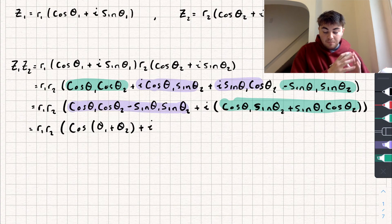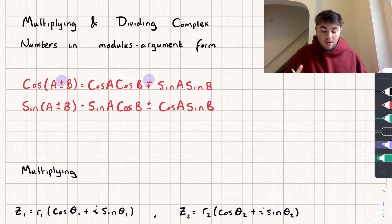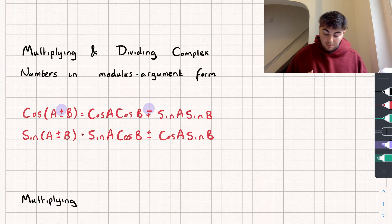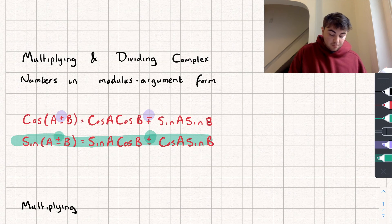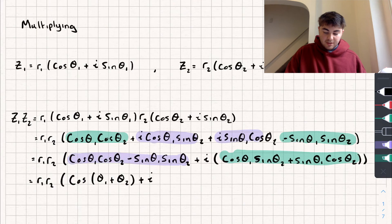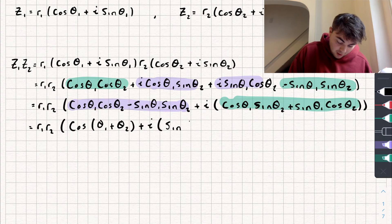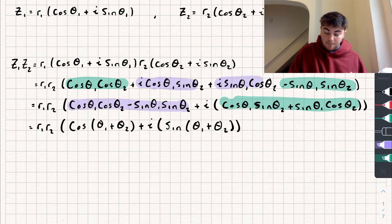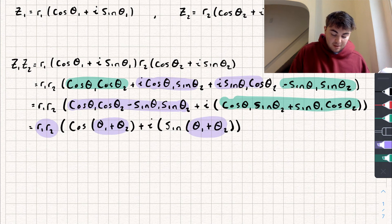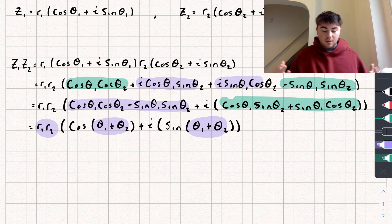For the imaginary part: cos theta1·sine theta2 plus sine theta1·cos theta2 refers to the sine angle addition formula. Because we're doing the addition, we add the angles, giving plus i·sine(theta1 + theta2). So when multiplying complex numbers in modulus-argument form, all we do is multiply the moduli together and add the arguments.